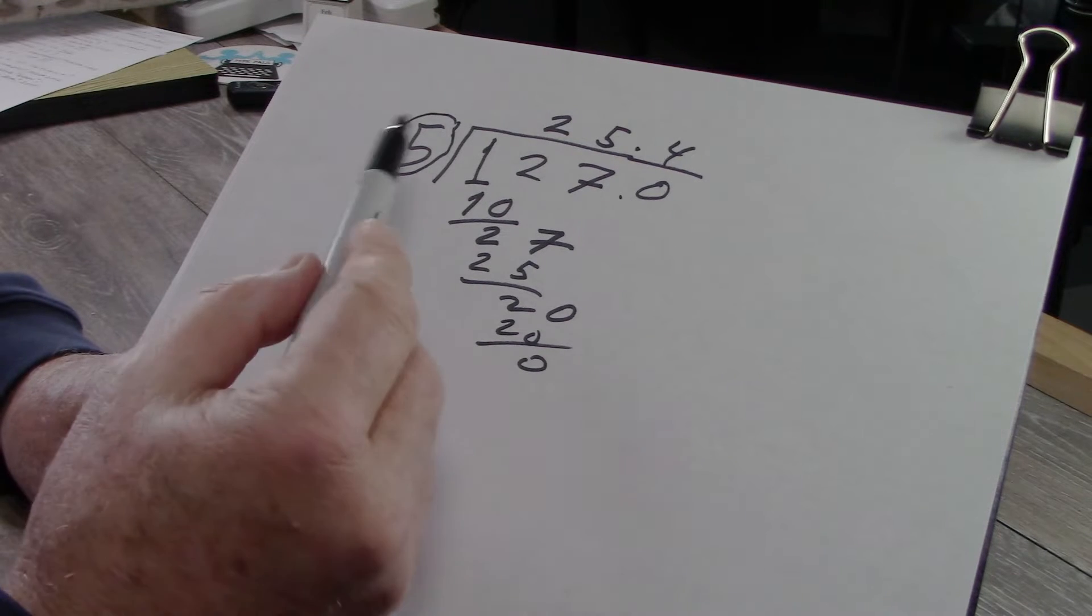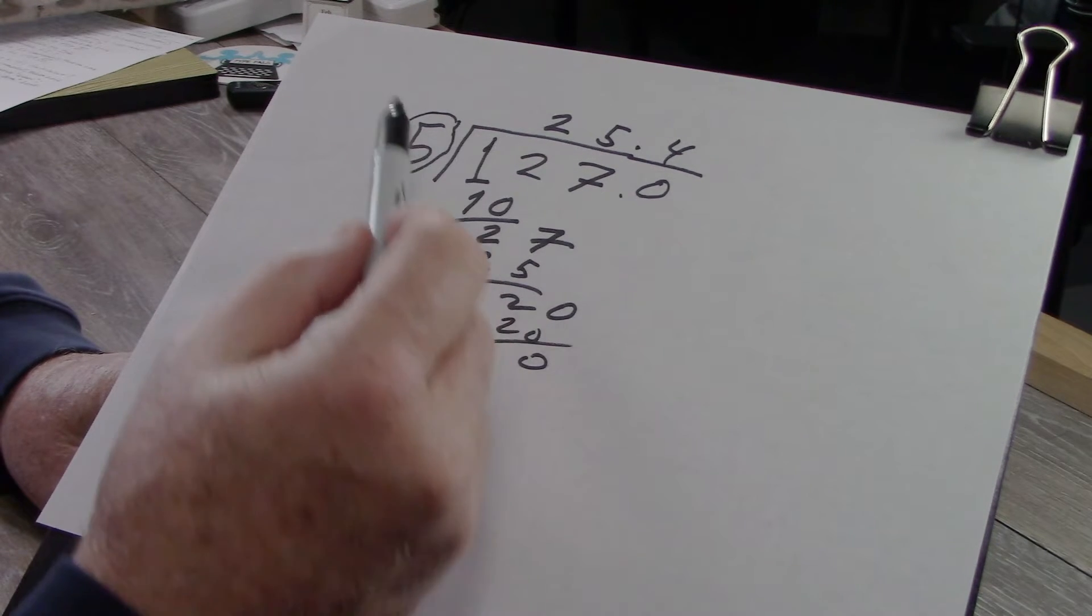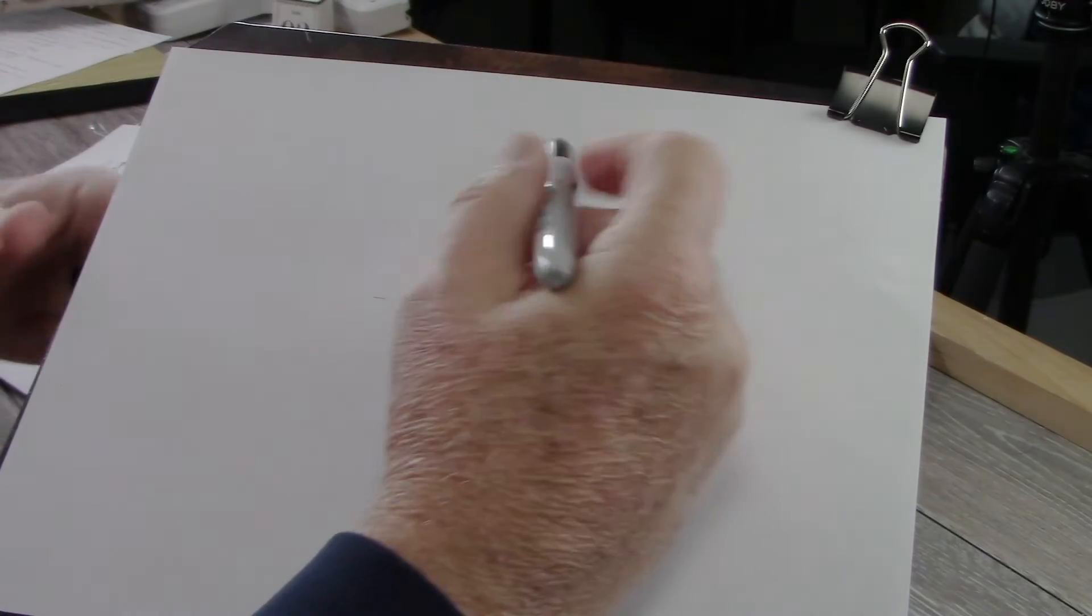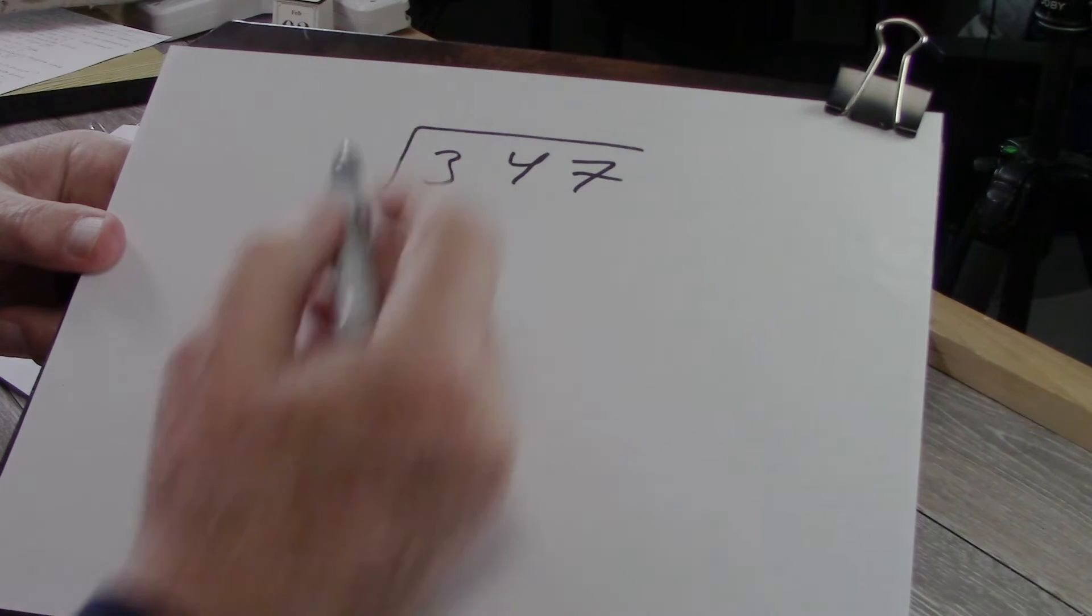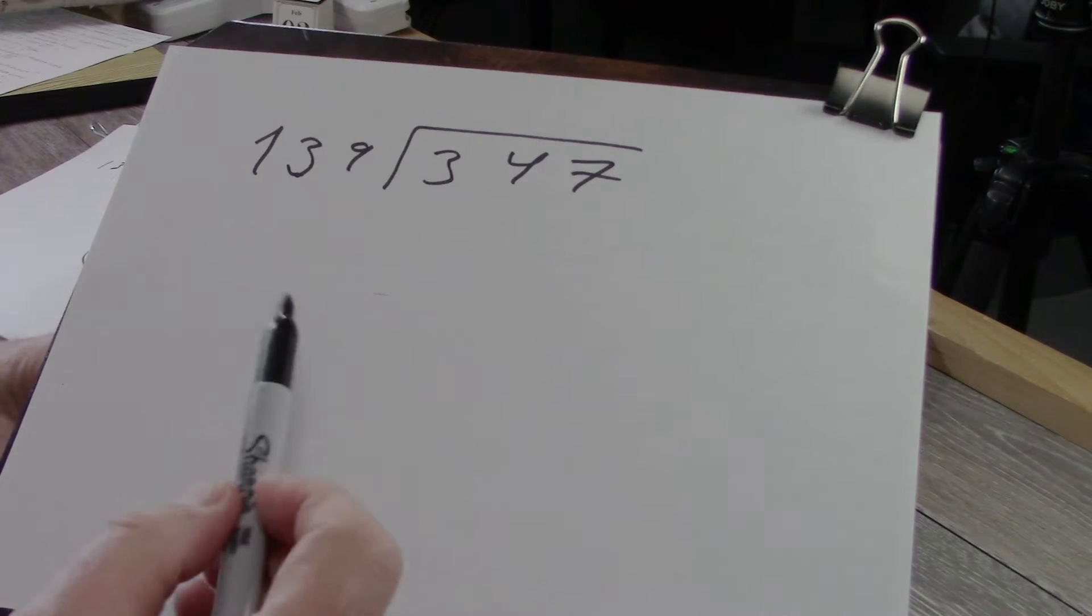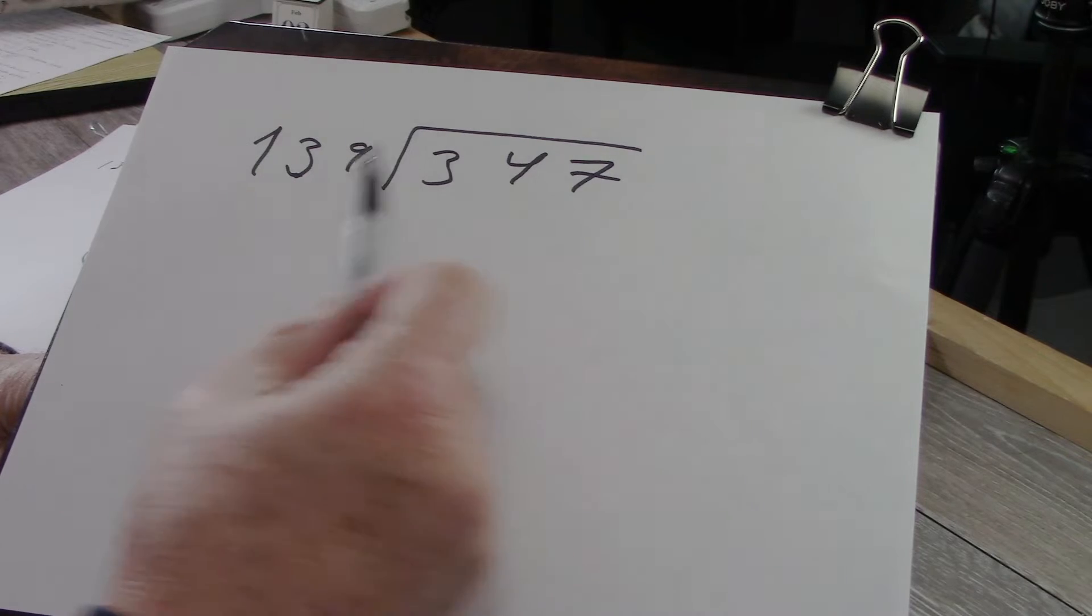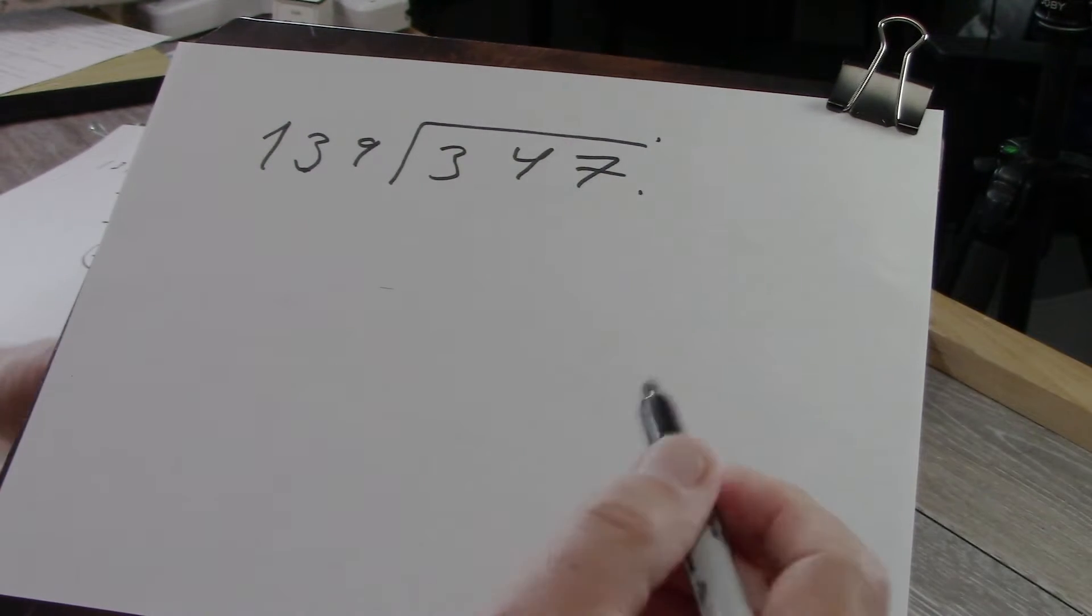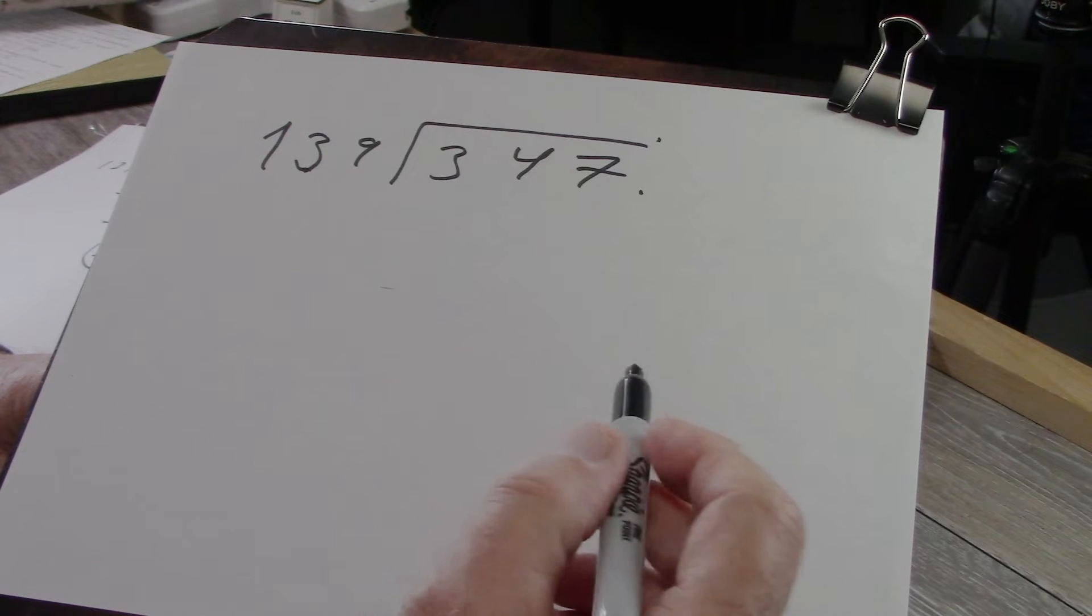For instance, being able to accurately guess how many times it goes into each part of the dividend. Let's try a larger problem. 347 divided by 139. So I'm going to first of all have to figure out how many times 139 goes into 347. Here's our decimal point. And I'm going to guess maybe 3 times. Let's see.